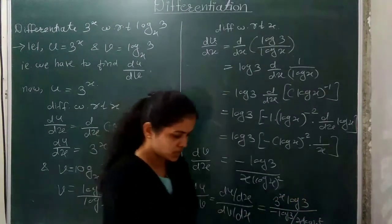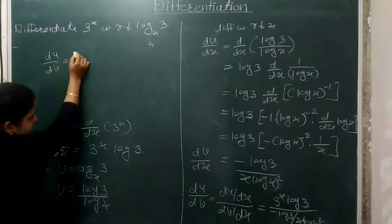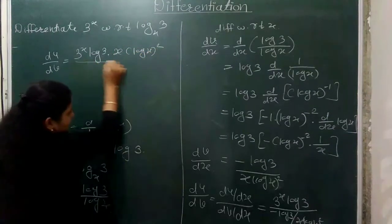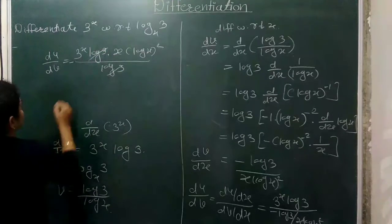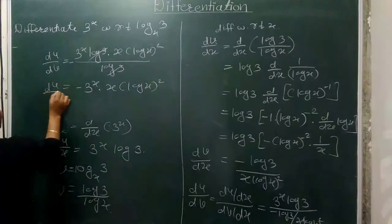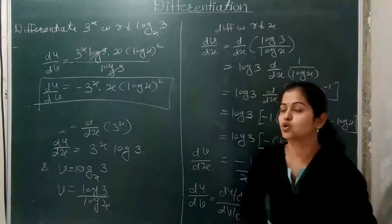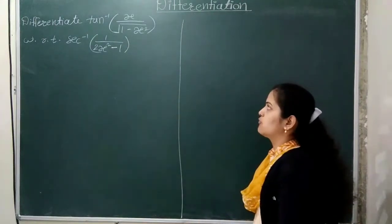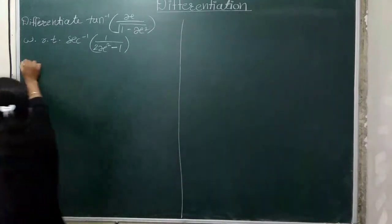Using du/dv equals du/dx upon dv/dx: log 3 terms cancel. The final answer is minus 3 raised to x times x (log x) squared. This is the solution for differentiating 3 raised to x with respect to log 3 to the base x.